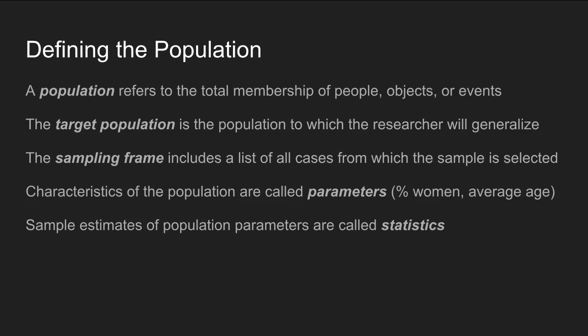The sampling frame is basically a list of cases from that target population from which a sample is selected. Characteristics of populations are called parameters — for example, the percentage of women or the average age of a population. Once a sample is selected, estimates of those population parameters are called statistics, or sample statistics.